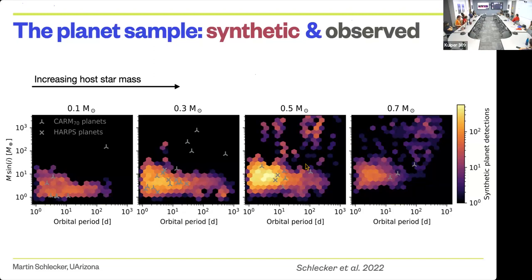But when we bring in the stellar mass dependency and split things up, we see a clear mismatch for giant planets. In the observed sample, giant planets occur around the lower mass stars—exactly where our model doesn't produce any. In the protoplanetary disk of these low mass stars there's simply not enough material, and if they're more massive, planet migration is more efficient and planets drift into the star. We cannot form giant planets with the default core accretion mechanism.